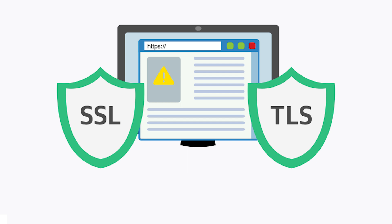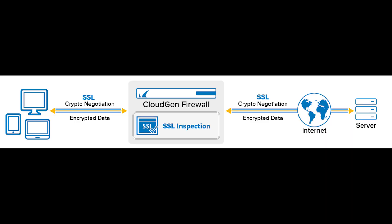SSL/TLS inspection, or HTTPS inspection, is the process of intercepting SSL/TLS encrypted internet communication between the client and the server. Malicious content could be hidden in encrypted traffic alongside your legitimate data.